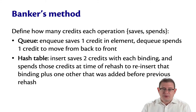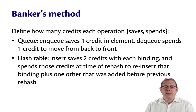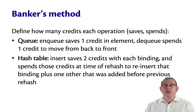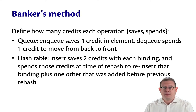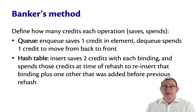Here's what that looks like for queues and hash tables. We need to define how many credits each operation saves or spends. With a queue, let's say that enqueue saves one credit in the element being enqueued, and that dequeue, when it goes to move an element from the back to the front, spends that credit. These account balances are never going to go negative — they'll always be either 0 or 1, and they go down to 0 exactly when an element moves from the back to the front, and that can only happen once.